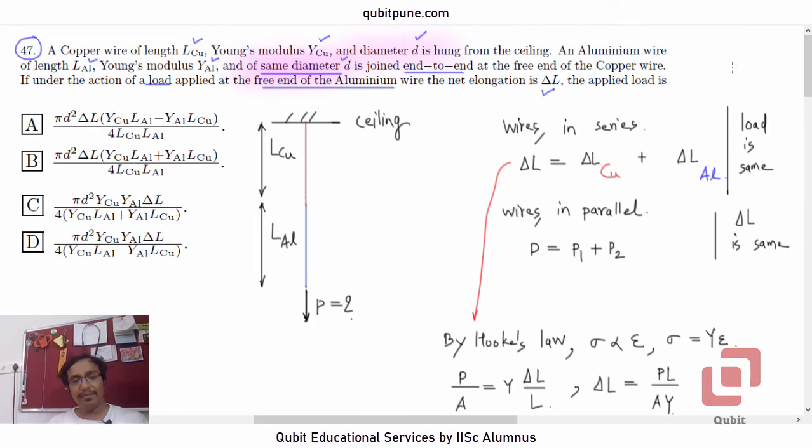So, question 47, option C. Very simple problem based on Hooke's law and the fact that if wires are connected in series, elongations get added, load remains the same. A similar concept could be asked in your edition of IIT. If wires are connected in parallel, elongation is the same and loads get distributed P1 plus P2, or in case if we have multiple wires, P1 plus P2 plus P3 and so on. So, see you in the next video with MCQ number three or 48.